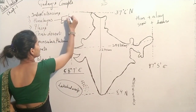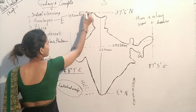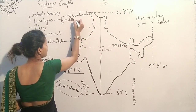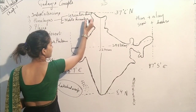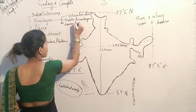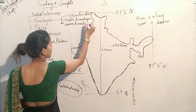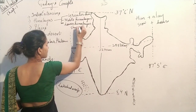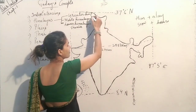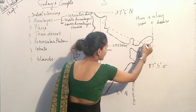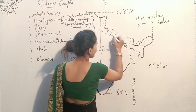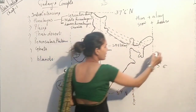The Himalayas are basically divided into three parts. First is the Greater Himalayas, also known as Himadri. Second is the Middle Himalayas, also known as Himachal. Third is the Lower Himalayas. The Himalayas are extended from Jammu Kashmir in the north to Nagaland, Tripura, Assam, and Arunachal Pradesh in the east, or up to the Arakan Yoma mountains in Myanmar.